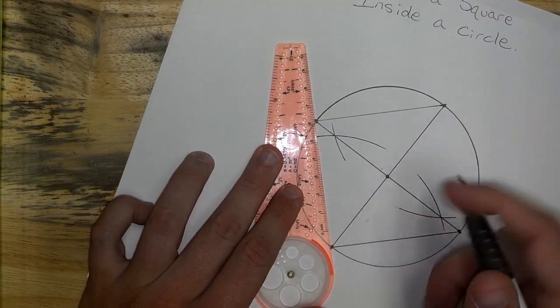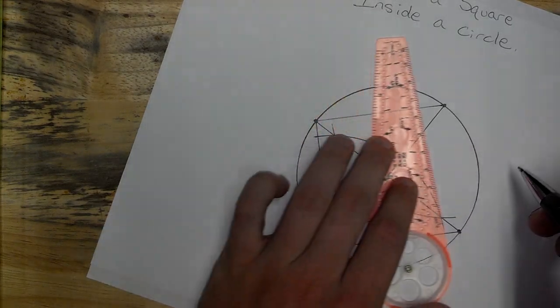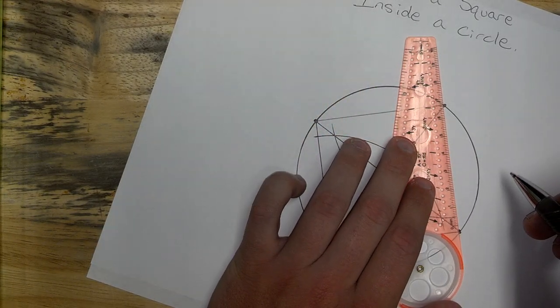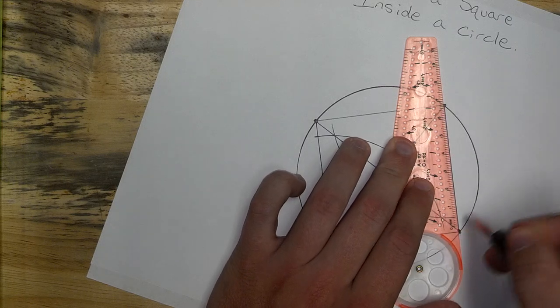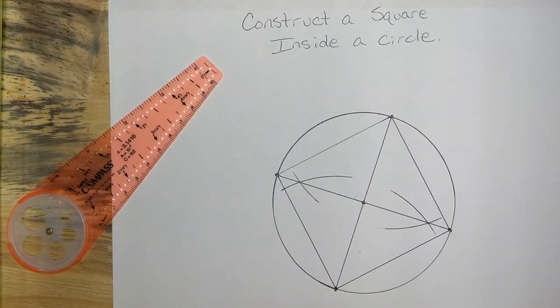And if you guys notice, those two diameters that we drew in there, those create the diagonals of the square. Just an extra little fact. And there's your square inside of a circle.